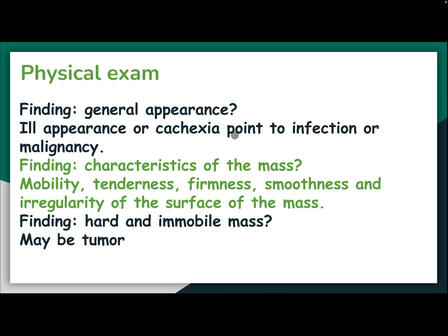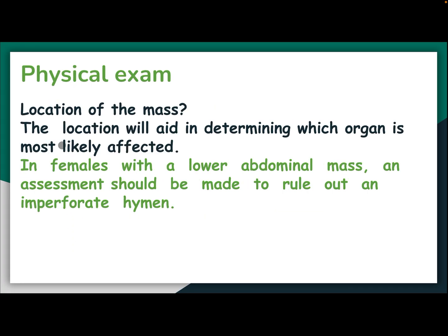Physical examination findings: general appearance — an ill or cachectic patient points to infection or malignancy. Assess the characteristics of the mass: mobility, tenderness, firmness, smoothness, and irregularity of the surface. A hard and immobile mass may indicate a tumor.